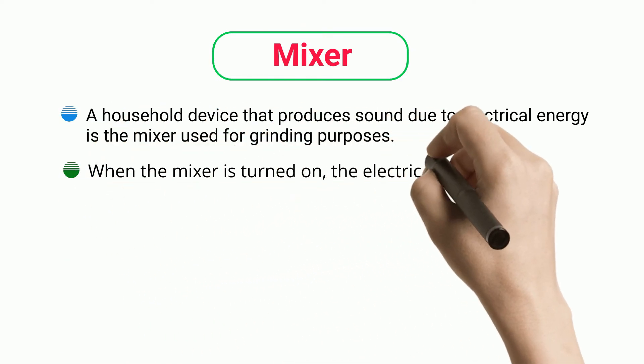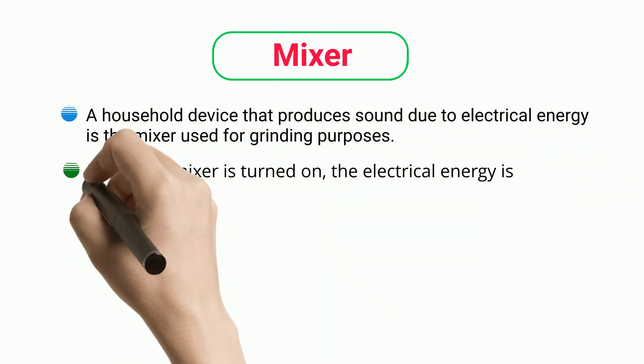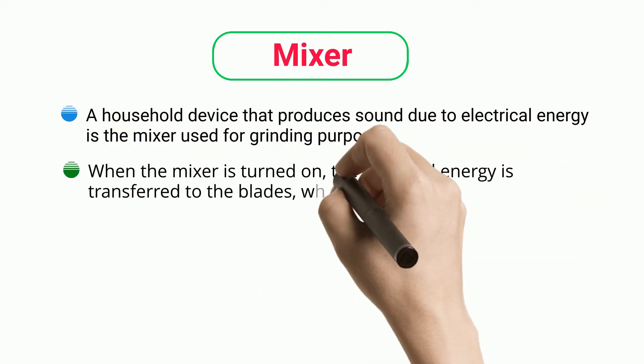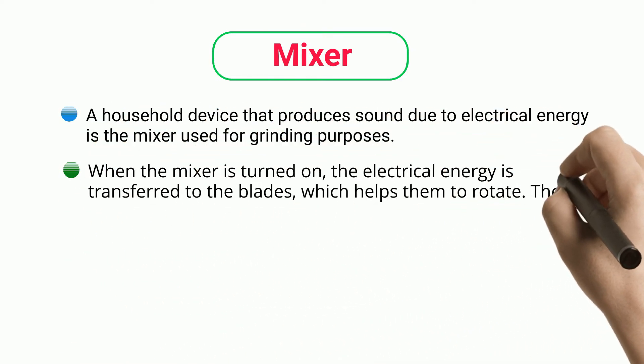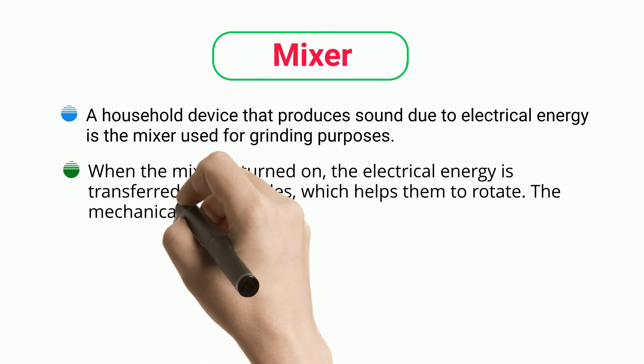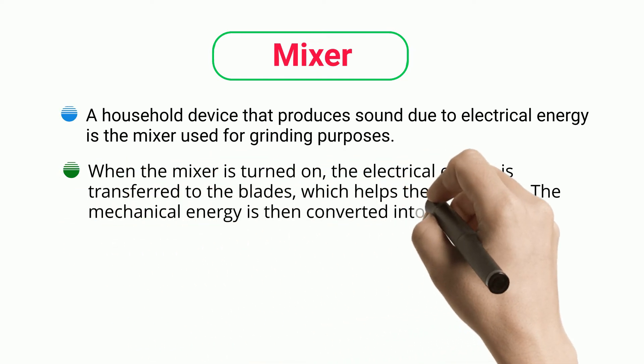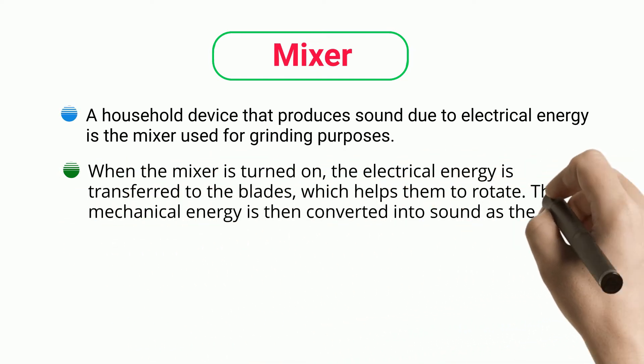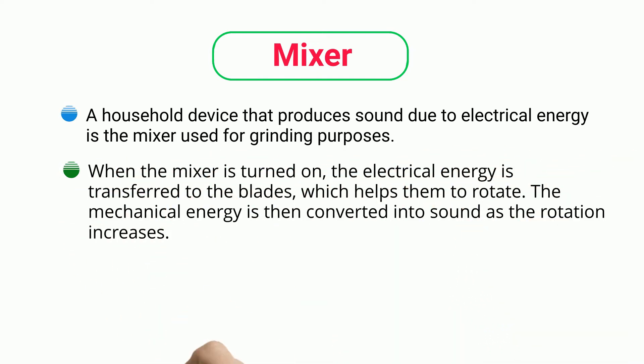A mixer is a household device that produces sound due to electrical energy, used for grinding purposes. When the mixer is turned on, electrical energy is transferred to the blades, helping them rotate. The mechanical energy is then converted into sound as the rotation increases.